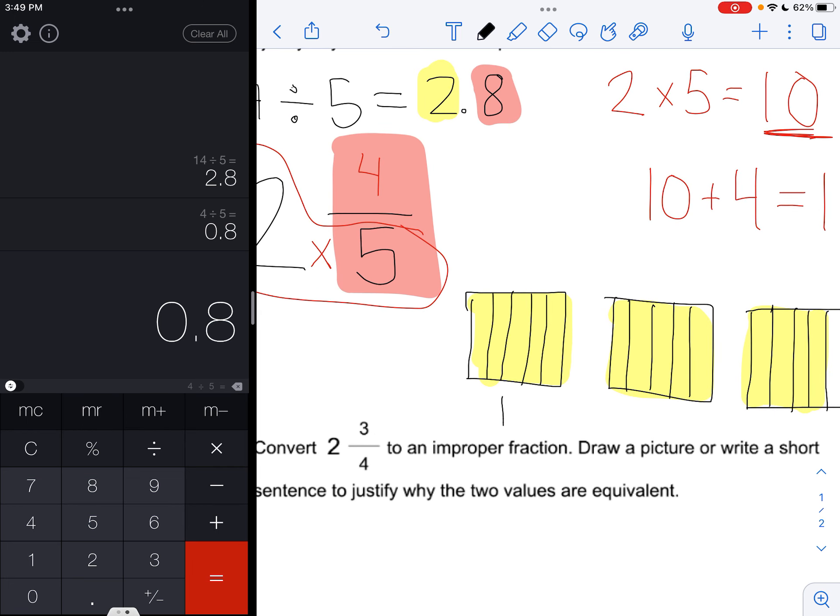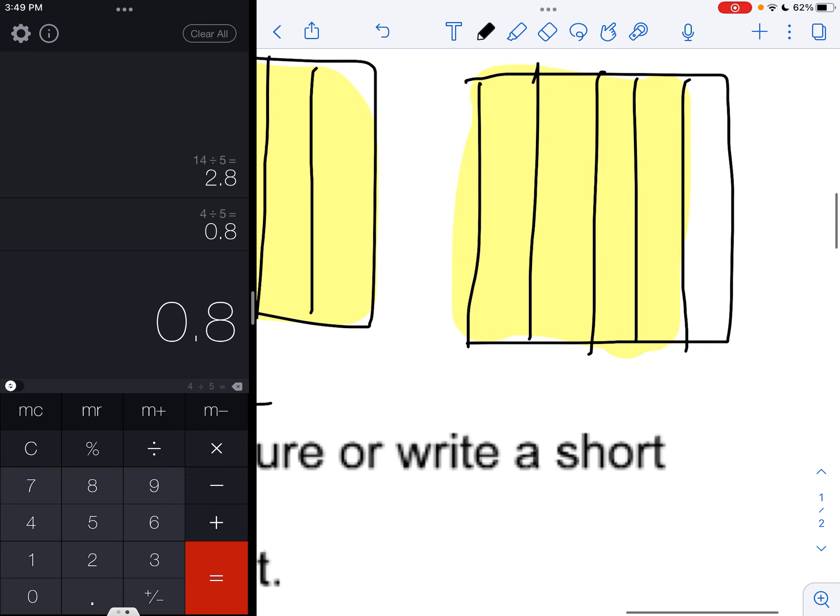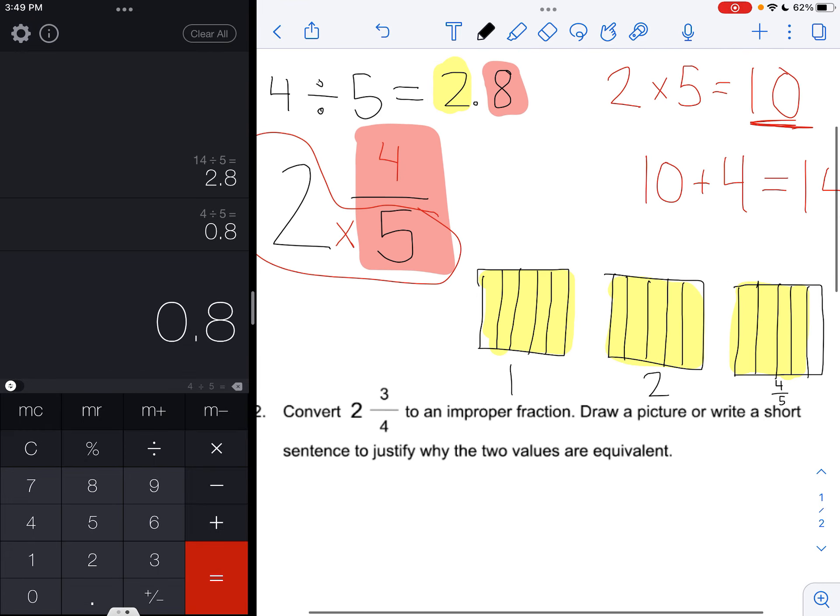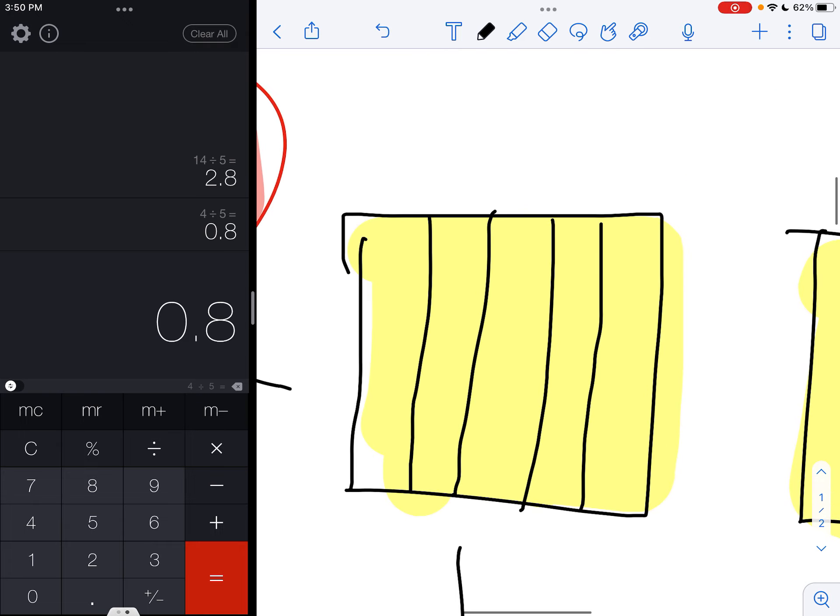So we can write on this side, well, we know we have 1 whole, 2 wholes, and then we have 4 fifths left over. So we have 2 and 4 fifths, which is exactly what this mixed number says.